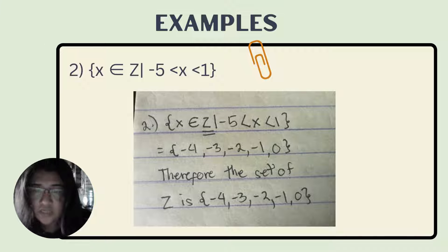Therefore, the set of all integers, which is Z, is negative 4, negative 3, negative 2, negative 1, and 0. It's that simple. This is the final answer.